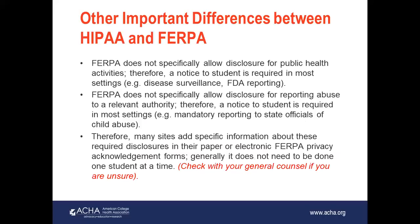FERPA does not specifically allow for disclosure or reporting of abuse to a relevant authority. So many schools, in their overall consent for treatment and their privacy consent under FERPA, will state that they are going to follow mandatory reporting to state officials of child abuse or elder abuse. Once again, FERPA is a minimum and your state may supersede those guidelines, even without giving specific notice to the student.